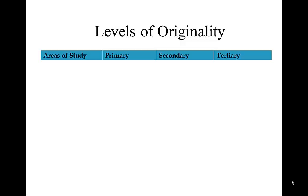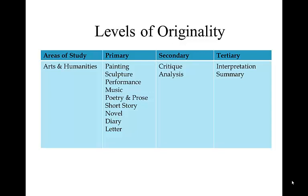To assess the level of originality, determine where and how the author developed the idea or information. There are three main levels of originality: primary sources, secondary sources, and tertiary sources. In the arts and humanities, primary sources are original creative works such as paintings, sculptures, performances, music, poetry, prose, short stories, novels, diaries, letters, and more. These original works are often critiqued and analyzed in secondary sources, and the critique or analysis is published in professional literature for those fields. However, many times these original works are interpreted, explained, and summarized in tertiary sources.